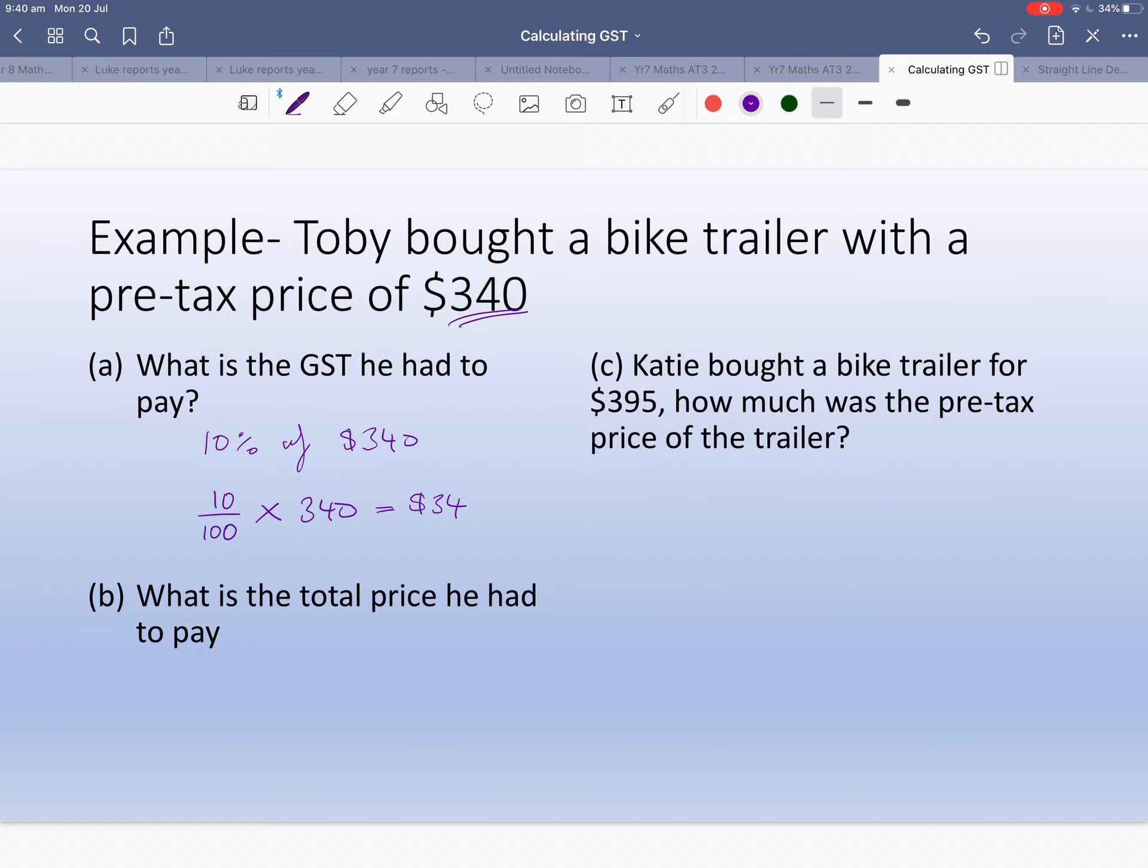That's the GST, so the GST is $34. What is the total price that he had to pay? The total price is the pre-tax price, $340, plus the GST which is $34. We add those together and get $374. That's how much he had to pay for the bike trailer including the GST.